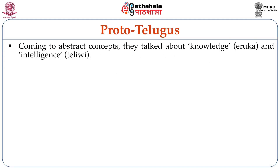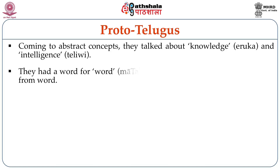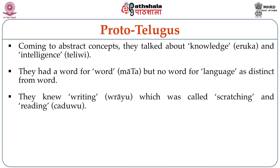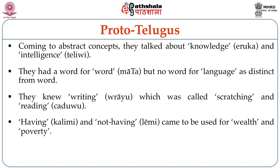Coming to abstract concepts, they talked about knowledge (eruka) and intelligence (telivi). They had a word for word (mata) but no word for language as distinct from word. They knew writing (rayu), which was called scratching, and reading (chaduvu). Having kalimi and not having lemi came to be used for wealth and poverty.